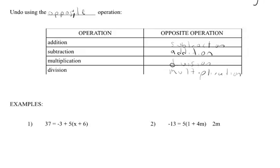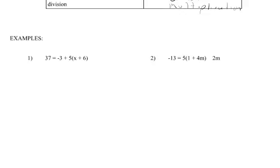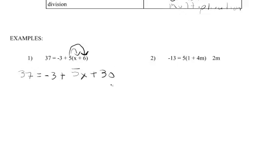Let's try this using reverse PEMDAS. The first thing we have to do is distribute. We have to distribute this five to everything in the parentheses, so this is going to be five x plus thirty. So we have thirty seven equals negative three plus five x plus thirty. Now we're going to combine like terms on the same side of the equal sign. This negative three and this positive thirty don't have a variable, so they're like terms. Combining them gives us twenty seven plus five x equals thirty seven.